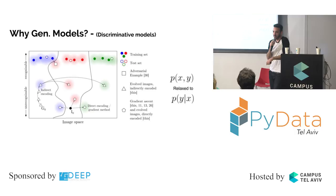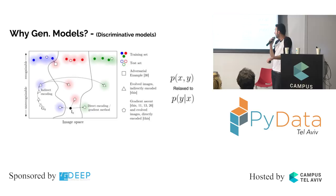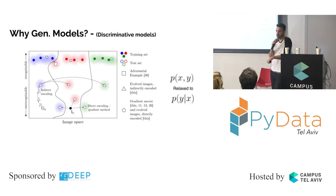Some of you may be familiar with this slide. This was arguably the best paper of 2015, by NVIDIA. The title was something like 'Why are deep learning models easily fooled?' or 'How to fool deep learning models.' They pointed out something really fundamental.